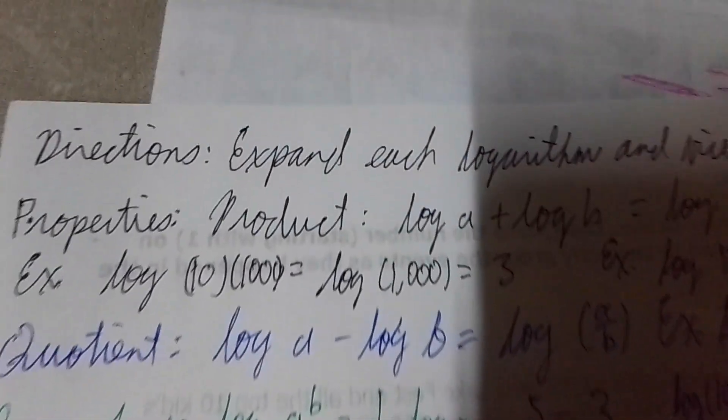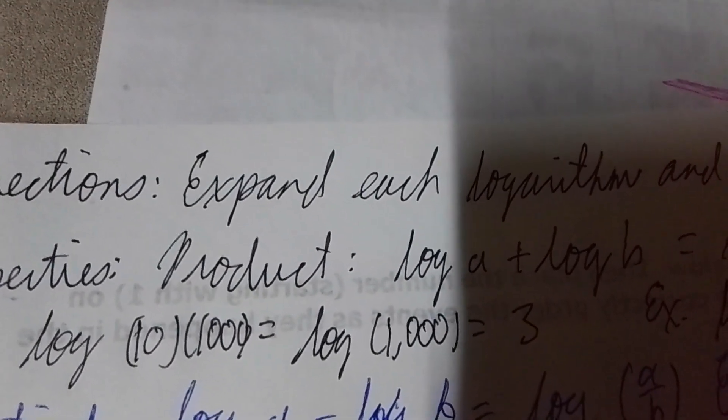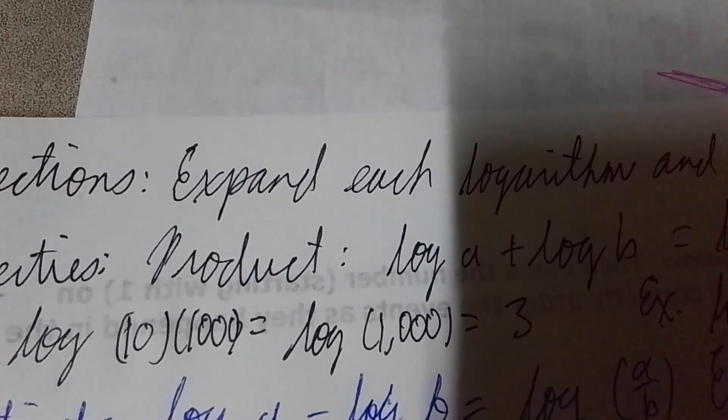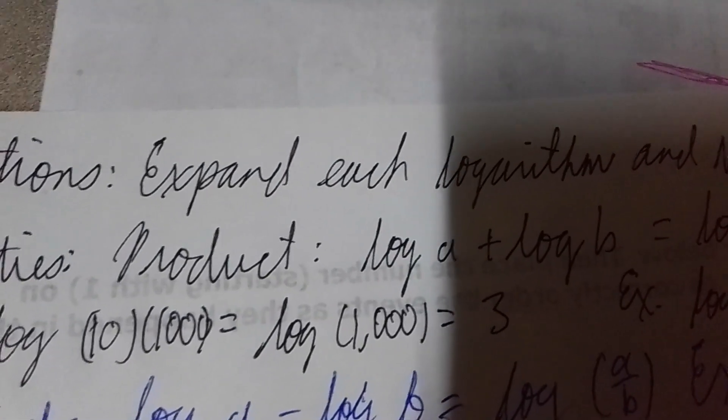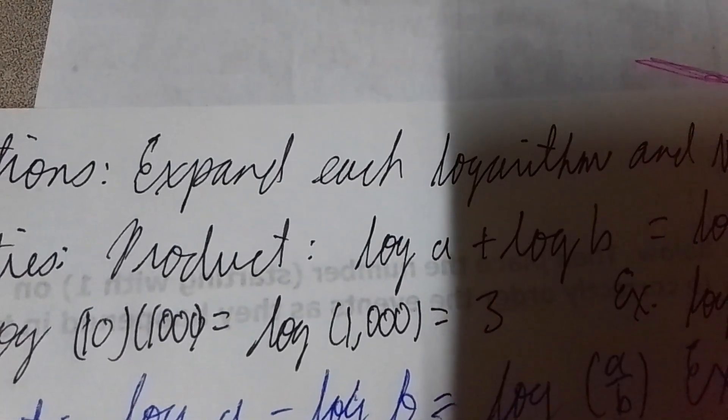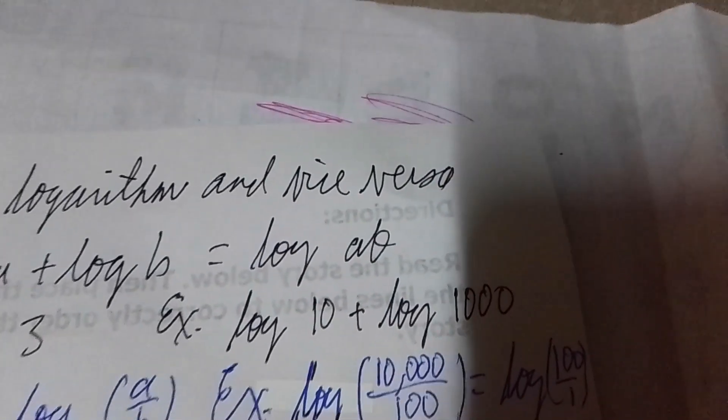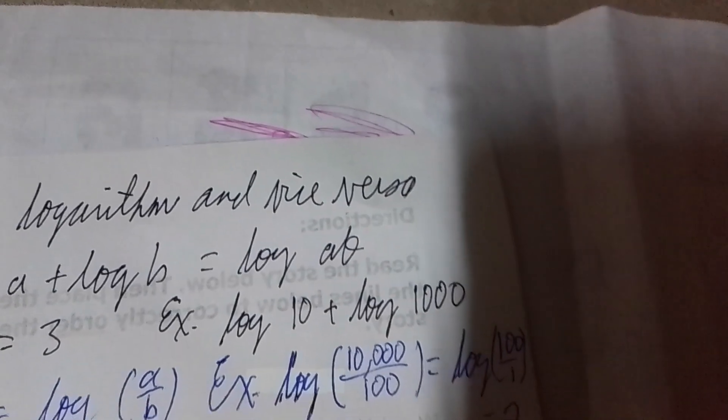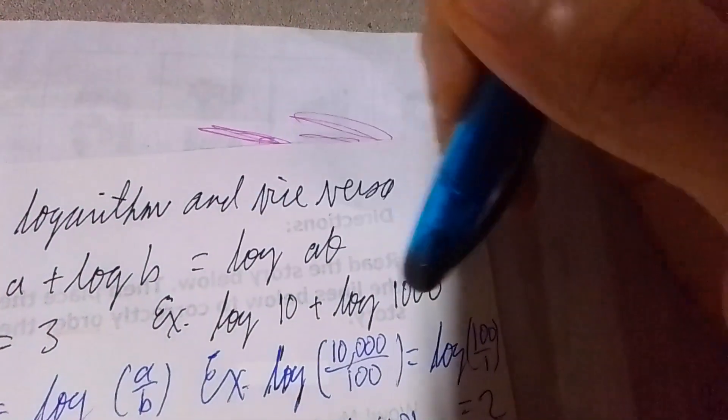For example, if we have log of 10 times 1,000, normally log of 1,000 is supposed to be 3. If you apply the expansion of logs, that becomes log of 10 plus log of 100. Log of 10 is 1, log of 100 is 2. So you're supposed to get 3. That's the answer.